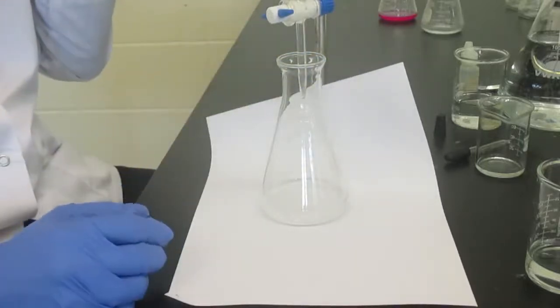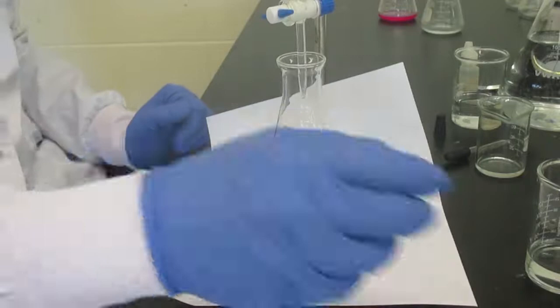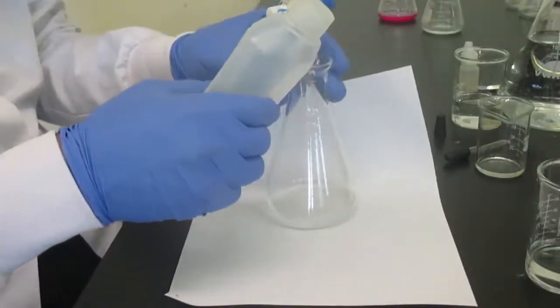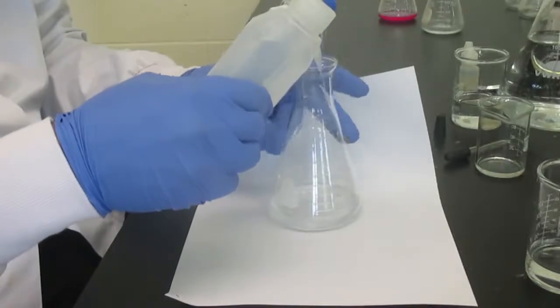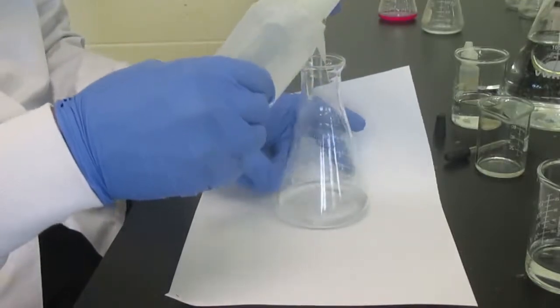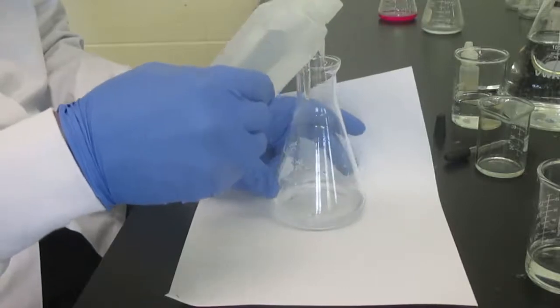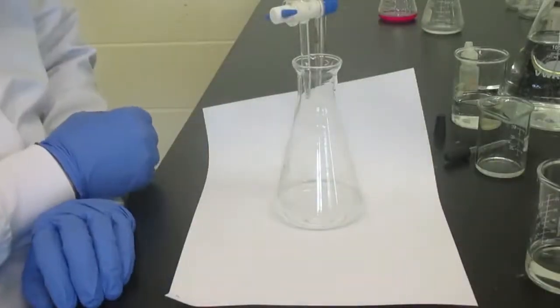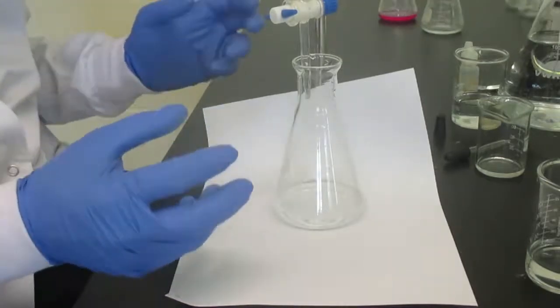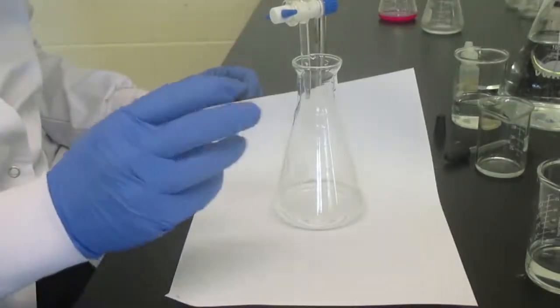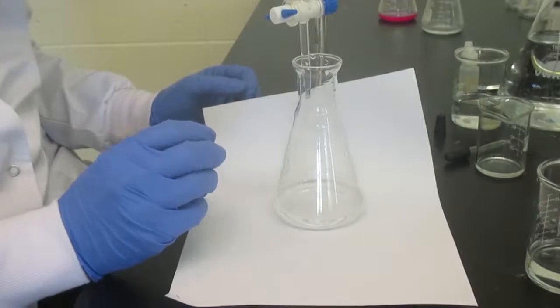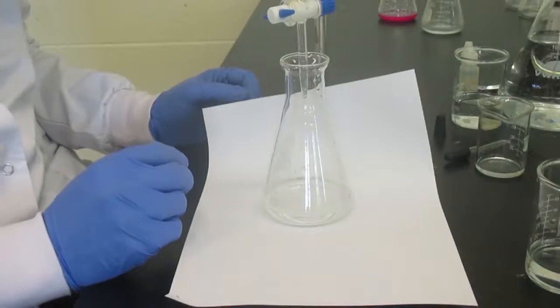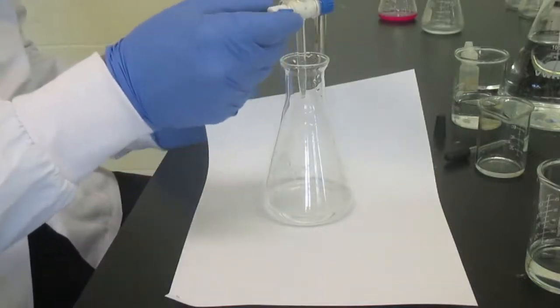Before we approach our final drop, I'm actually going to rinse down the sides of the Erlenmeyer flask. And you might think, what am I doing because I'm changing the concentration. Remember, at this point, what's in our sample, concentrations don't matter anymore. We're interested in molecules reacting. So I have not changed the number of acid molecules, and I have not changed the number of base molecules by rinsing down my flask. So therefore, that's perfectly acceptable.